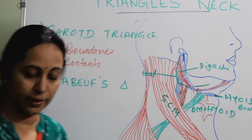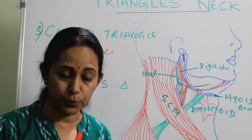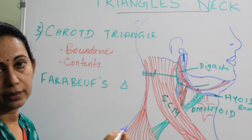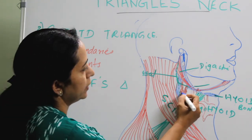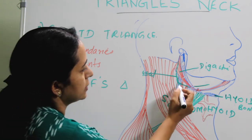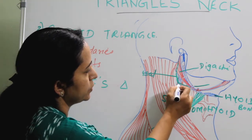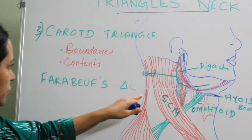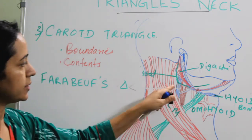There is another triangle located within the carotid triangle called the Farabeuf triangle. It is the area bounded by the hypoglossal nerve, the internal jugular vein, and the common facial vein. The common facial vein is given off from the internal jugular vein. The triangular area lying between the hypoglossal nerve, the common facial vein, and the internal jugular vein is called the Farabeuf triangle.